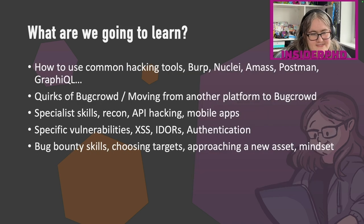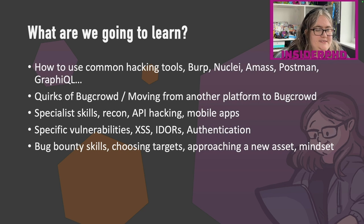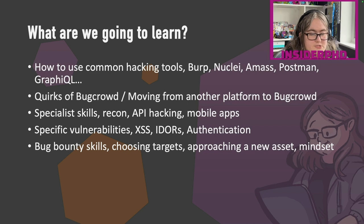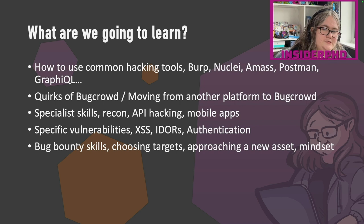So what are we going to learn in this series? We're going to cover how to use common hacking tools — Burp, Nuclei, Amass, Postman, Graphical. We're going to talk about some of the perks of BugCrowd, how you can find a target, understand the scope, and maximize your chances of finding a bug. We'll cover specialist skills like recon, API hacking, and mobile apps, and look in depth at specific vulnerabilities like cross-site scripting, insecure direct object references (IDORs), and authentication vulnerabilities. We'll also cover bug bounty skills: how to choose a target, approach a new asset, what mindset you need, and the role that luck plays — especially in finding your first bug.